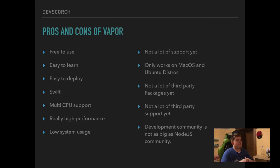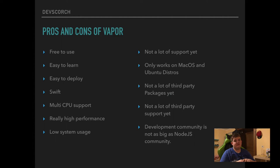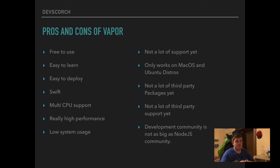Pros and cons of Vapor. Pros: it's free to use, easy to learn, easy to deploy, uses Swift, has multi-CPU support, really high performance, and low system usage. For the Spectre API I built for our Devcords platform, tested with 10 million API requests at once from multiple places, it only uses 13 MB of RAM and around 10 to 12% of CPU. The low system usage and performance is just amazing.